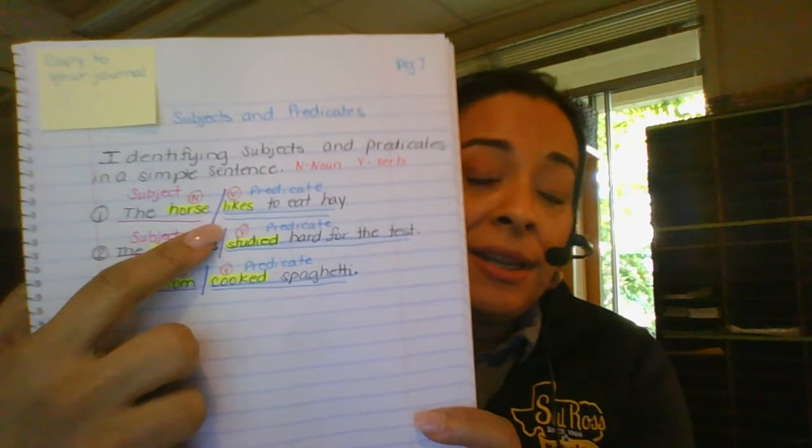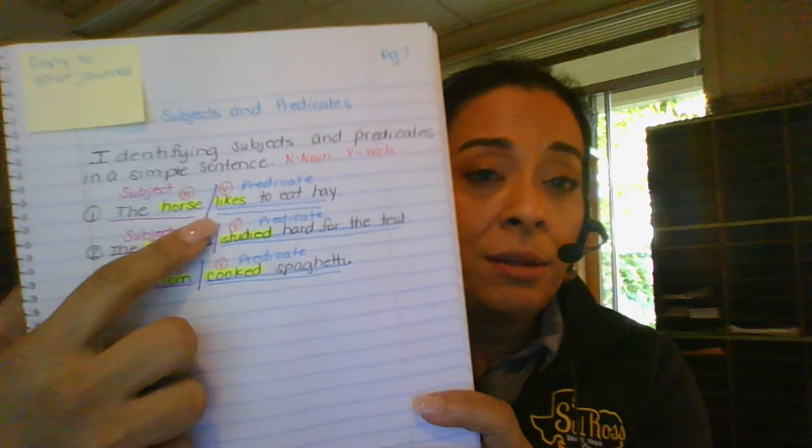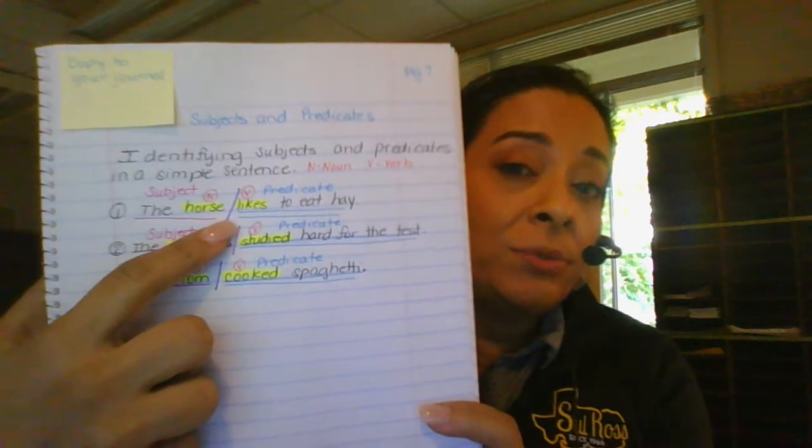I went ahead and drew a line in between the subject and the predicate. And remember, subjects is who we're talking about. Predicate is what the subject is doing.